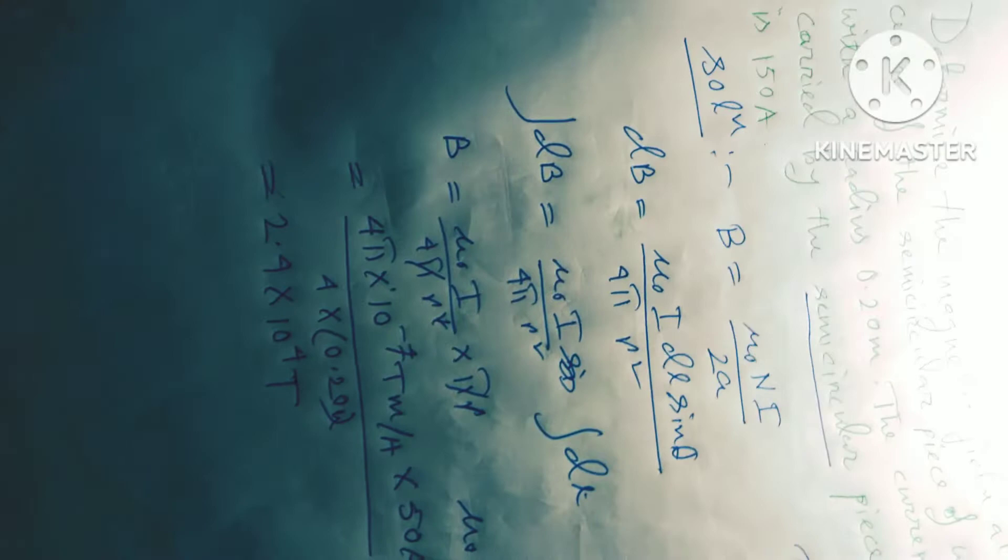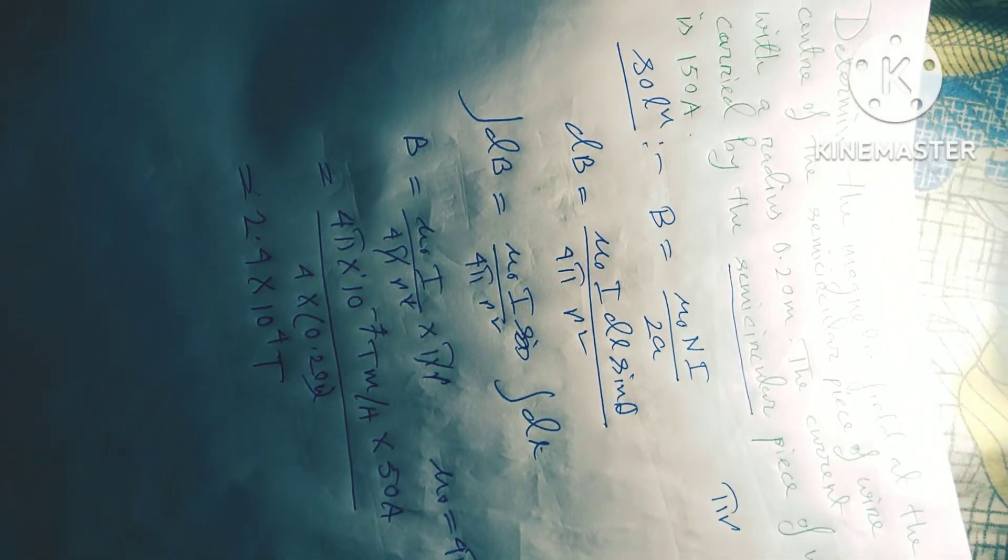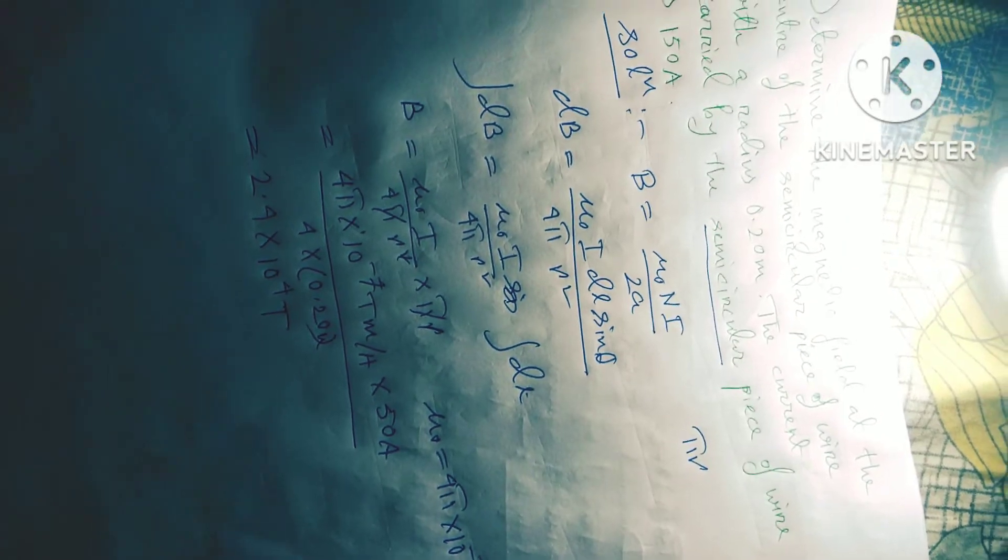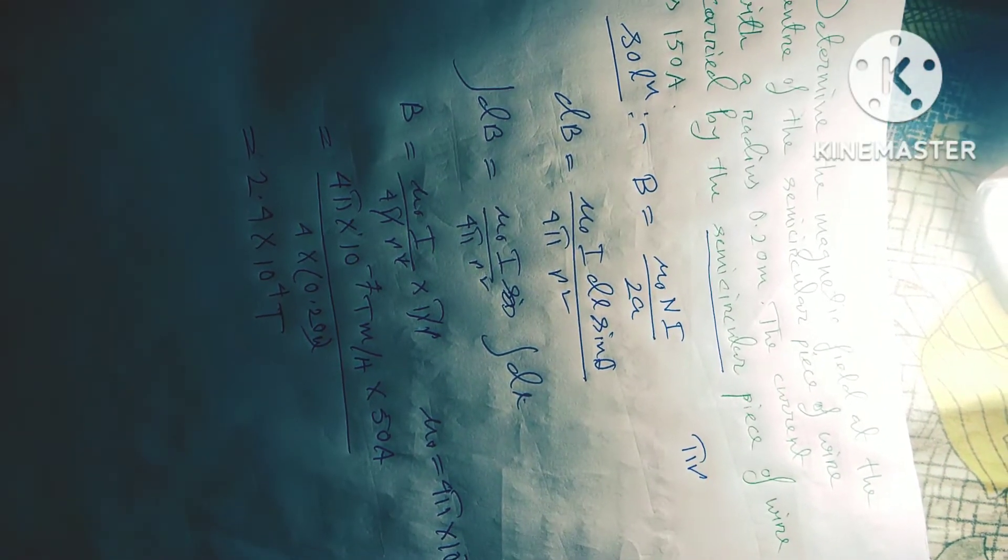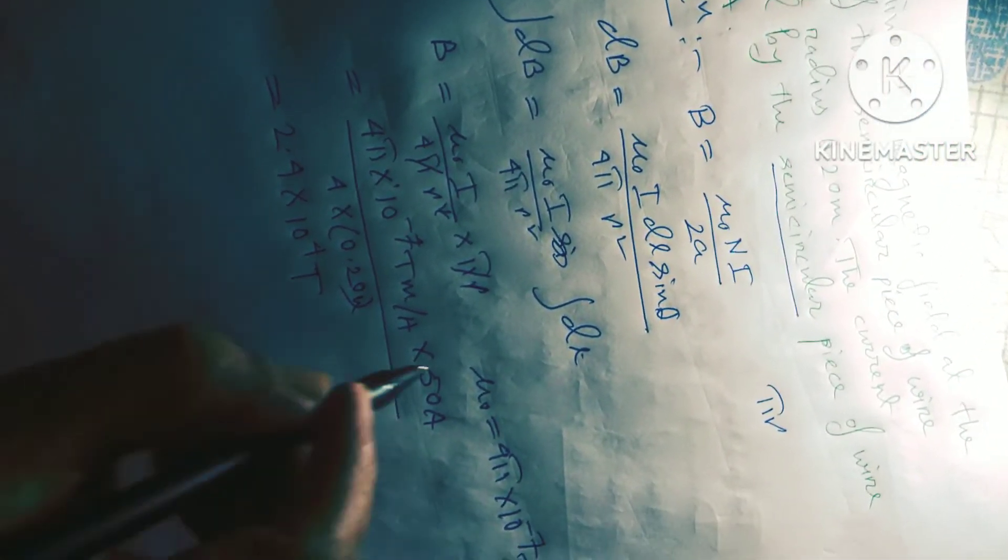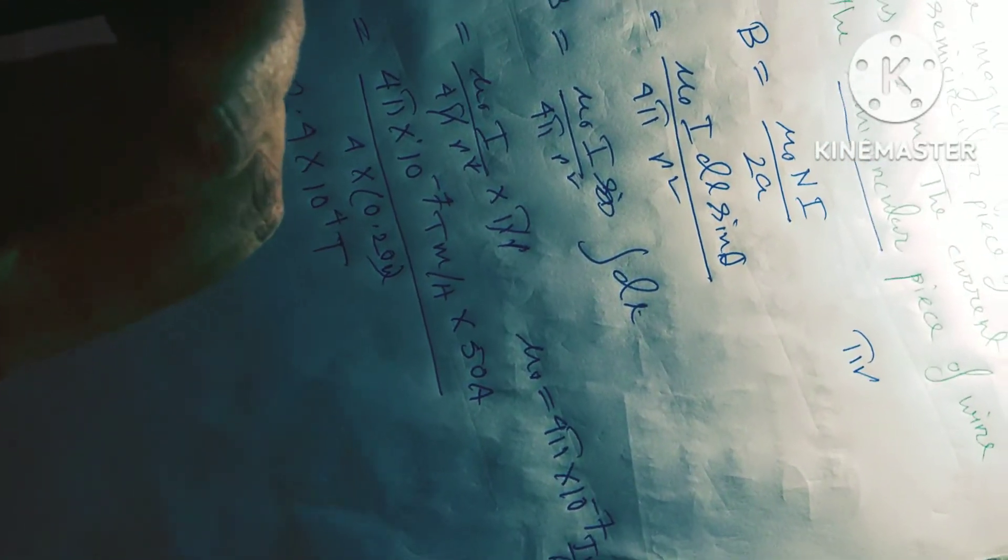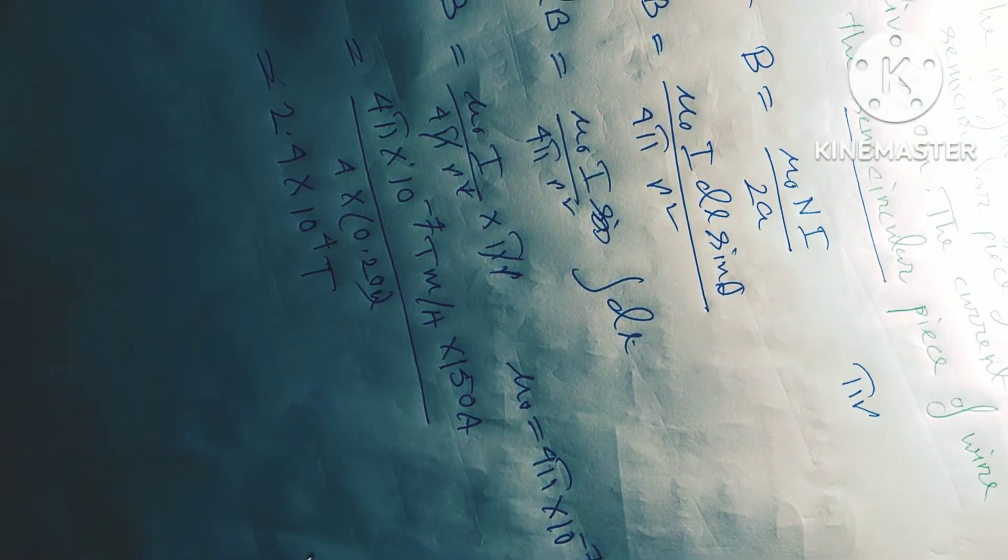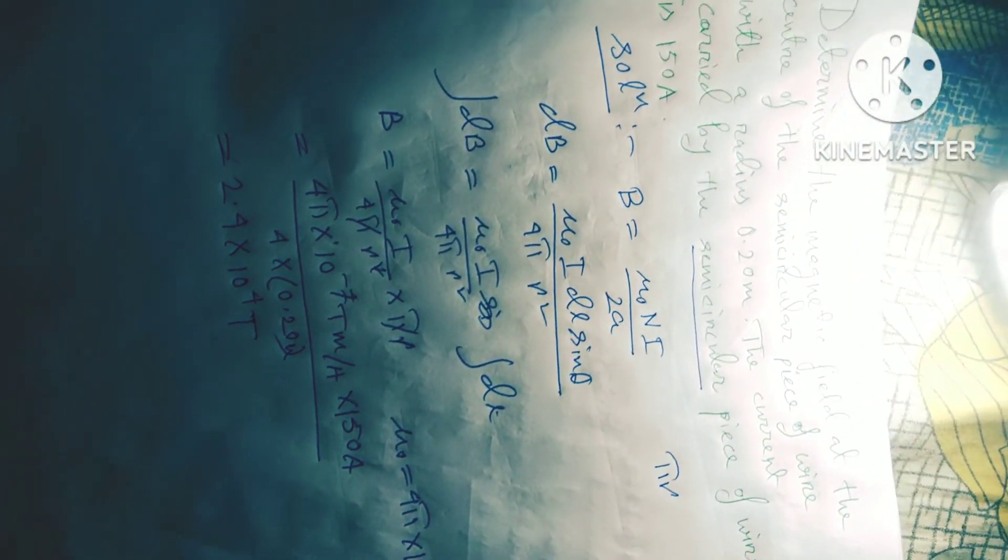So friends you see that this is my total solution for semicircular piece of wire of the given radius. Thanks for watching. The ampere is 150, so 150 ampere.